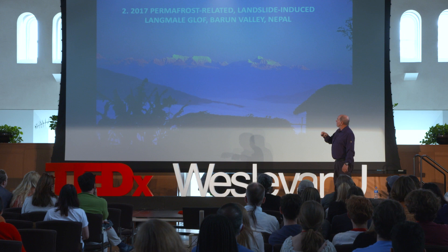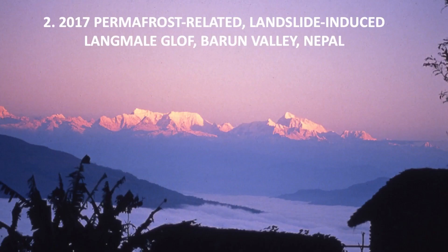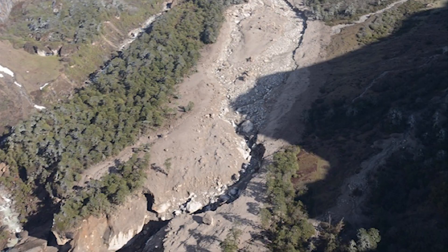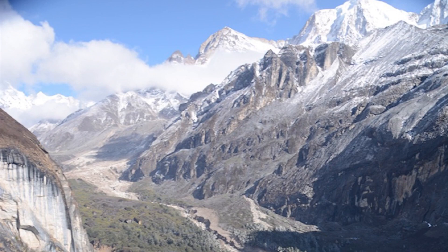Number two: what about permafrost-related floods? Permafrost is thawing. I call it the cryospheric glue that's been holding these high mountains together for millennia — it's now changing. With those changes, the mountains are not as strong as they used to be. As a result, we're getting an increase in landslides and rock fall that we didn't used to have. We were in the Mount Everest area in 2017 when we heard there had been a flood in the next valley over, so we were able to get a helicopter and fly in and confirm that there was a flood.